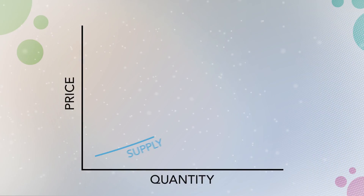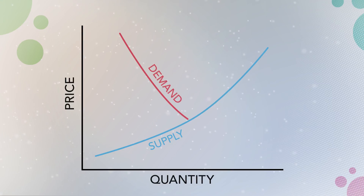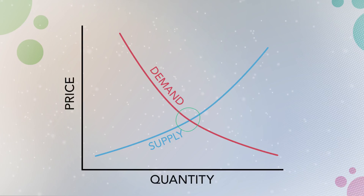When markets are well-functioning, market outcomes will lead to an efficient allocation of resources. In equilibrium, firms will provide the quantity of products that consumers are willing to purchase. If you plot curves for the supply of and demand for a product on the same graph, then efficiency is where the supply and demand curves intersect. Markets are well-functioning when certain conditions are met.